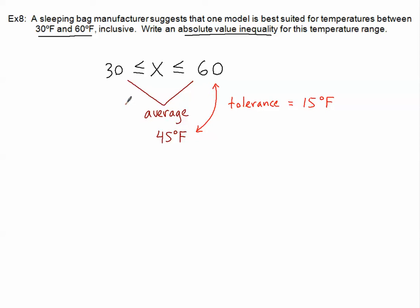Or, you know, margin, tolerance between the 45 and the 30 and the 45 and the 60. So there's our tolerance. That's an important number. And here's our average. That's an important number. Let's put this all together into our absolute value inequality.